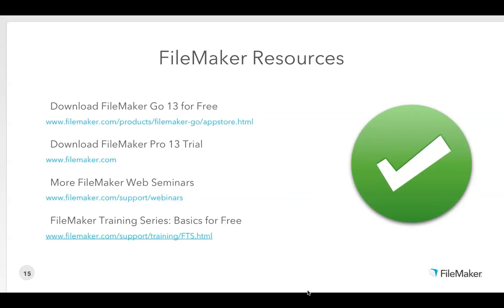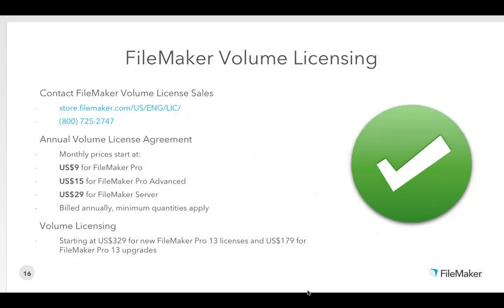The forums are a great resource after you've built up your foundational knowledge of FileMaker and want to start asking about specifics unique to your custom workflow — like how to create a specific calculation, script, layout, or functionality. If you're ready to purchase licensing, you can contact your volume licensing sales rep at the URL shown, or give us a call at 1-800-725-2747. We have a fantastic annual volume licensing agreement — monthly prices for FileMaker Pro as low as $9 and FileMaker Server as low as $29.